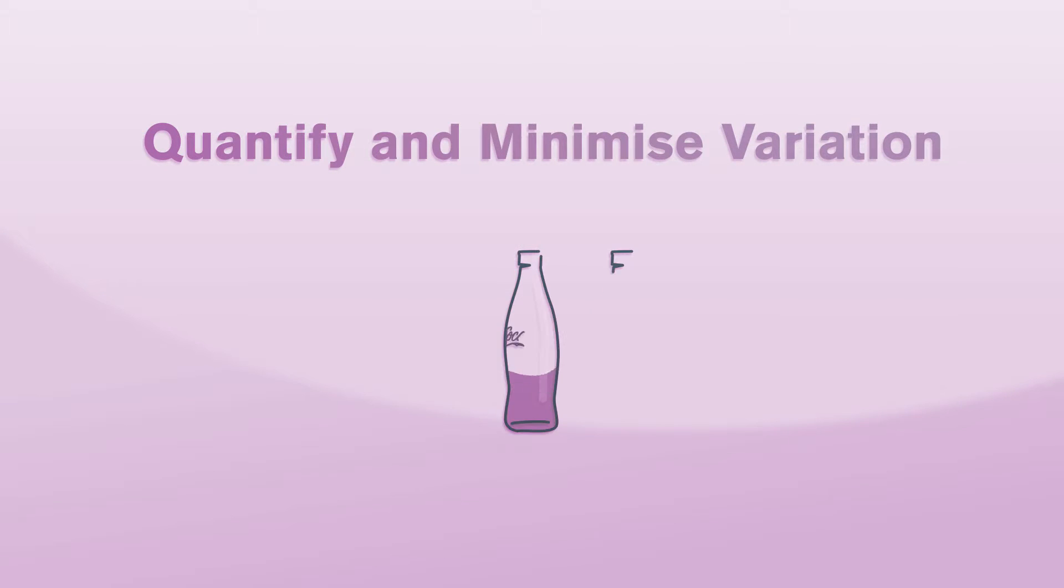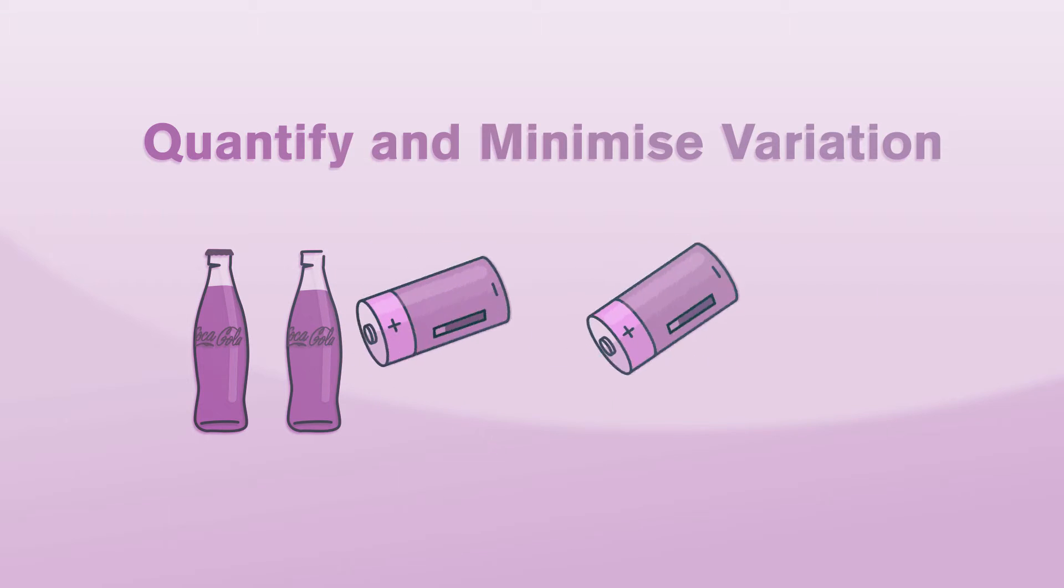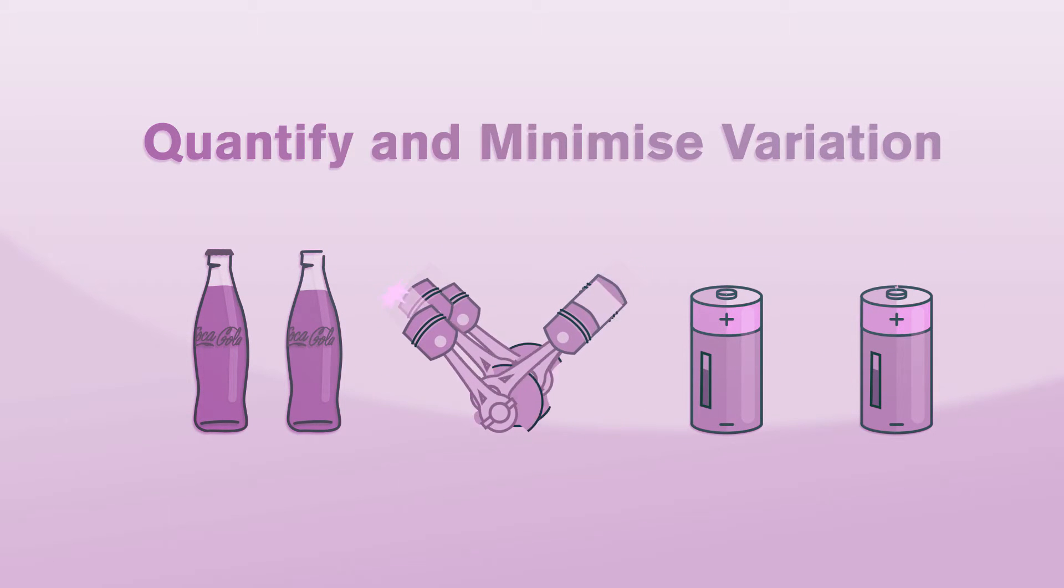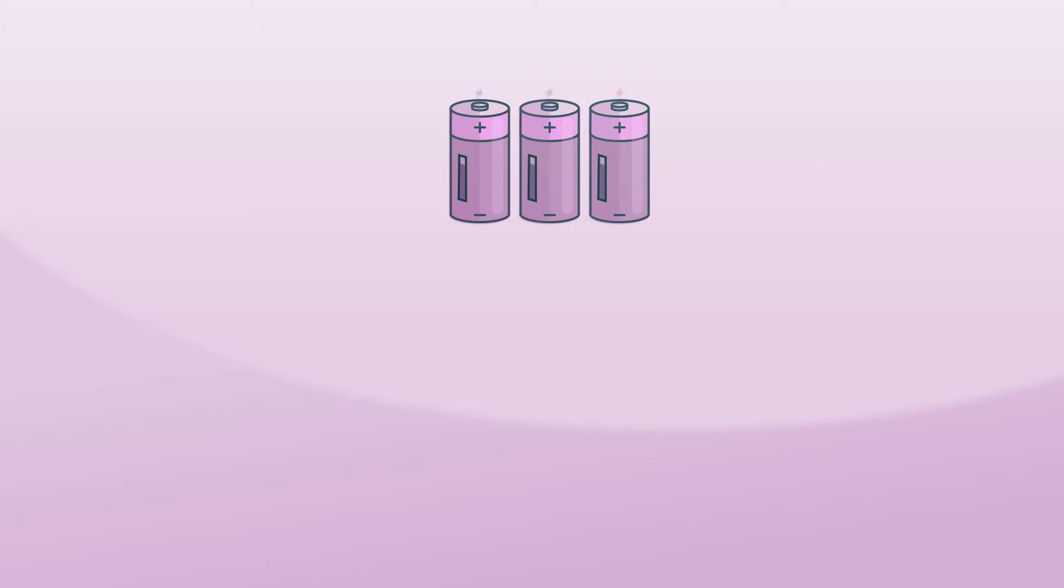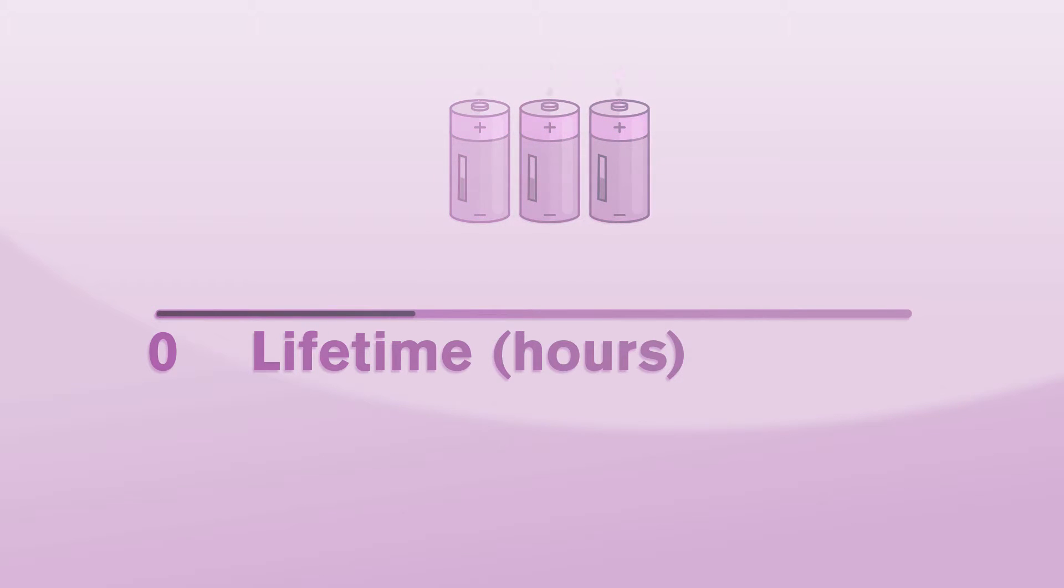Whether it is volume in a bottle, battery lifetimes or connector rod strength, the amount or size of each of these measures will vary depending upon which bottle, battery or connector rod we happen to observe. Consider testing three batteries to exhaustion to measure their lifetimes. With a precise enough measuring instrument we will always identify varying times to failure.